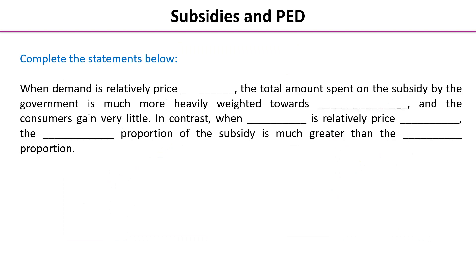So this is a really important point when we're evaluating subsidies. To make sure it's clear, we're going to ask you to fill in the blanks on the statement below. When demand is relatively price inelastic, the total amount spent on the subsidy by the government is much more heavily weighted towards producers and the consumers gain very little. In contrast, when demand is relatively price elastic, the consumer proportion of the subsidy is much greater than the producer portion.